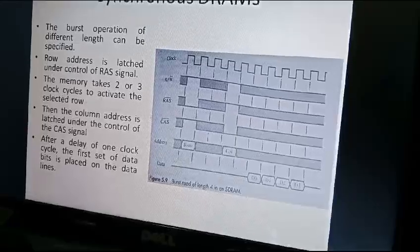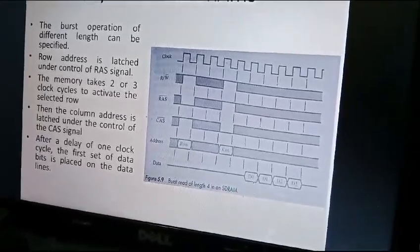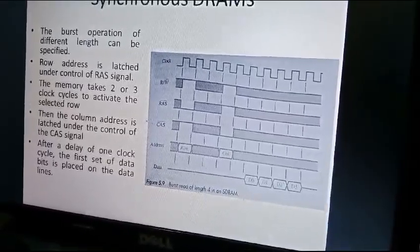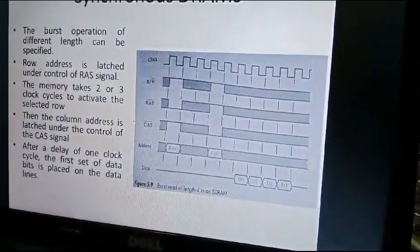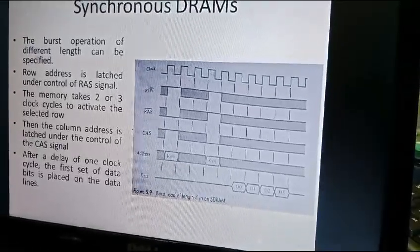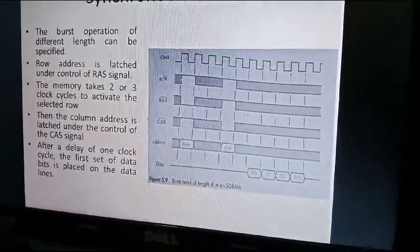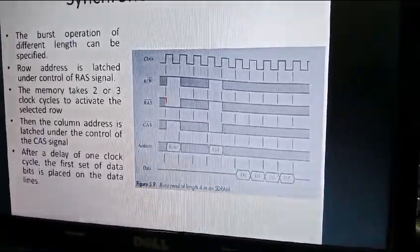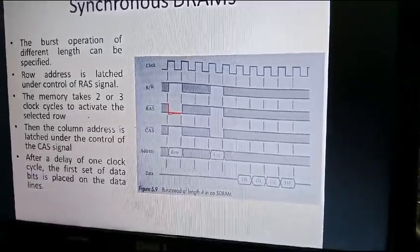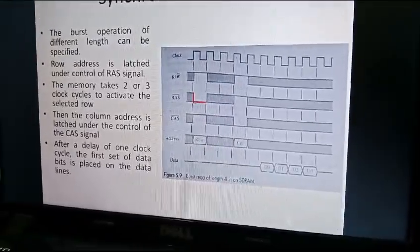This is the burst operation. Different lengths can be specified - here he has specified only four bytes, but you can specify different bytes based on availability. The row address is latched under the control of the row address selection signal. The row address is sent and latched under this signal.